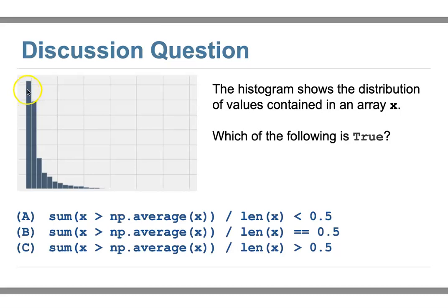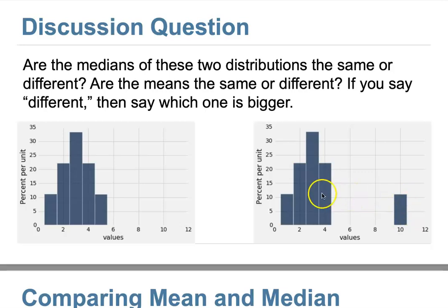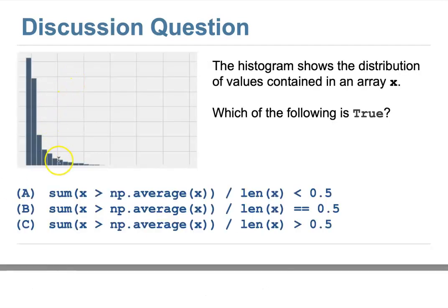This connects to what we discussed about distribution shape. If the distribution is symmetric, the average and the median are right in the center. However, if there are more values on the right — what we call right-skewed — then the average moves toward the right. Remember the question we asked: which distribution has a bigger average? Because the right-skewed distribution has bigger values, it pulls the average to the right.